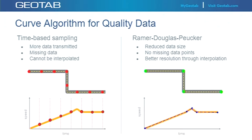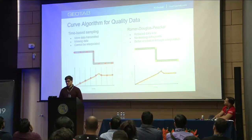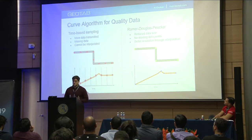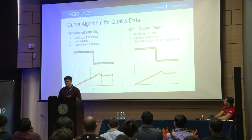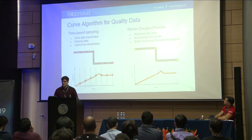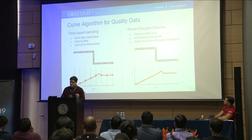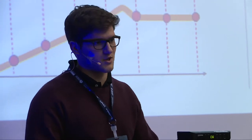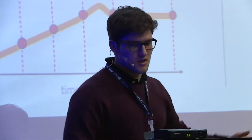One thing you need to address when managing that amount of data is ensuring high quality data. Other normal systems use a time-based sampling algorithm — sampling every one minute, two minutes, or 30 seconds — and obviously you can lose important data that way. What we use is a patented curve algorithm: we get data every second, and then we only save the minimum data needed to interpolate it afterwards and recreate, for example, the route or the speeding chart. We use this for GPS, speeding, the accelerometer, fuel level, and every engine measurement.